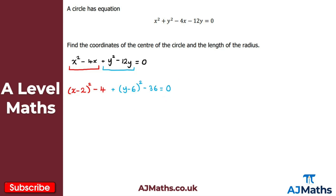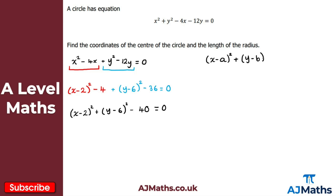To simplify, we combine the constants: x minus 2, all squared, plus y minus 6, all squared, minus 4 minus 36, all equal to zero. We then take the minus 40 to the other side to get x minus 2, all squared, plus y minus 6, all squared, equal to 40.